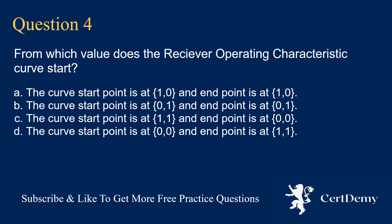Question 4. From which value does the receiver operating characteristic curve start? Options: start point at (1,0) end point at (1,0); start point at (0,1) end point at (0,1); start point at (1,1) end point at (0,0); start point at (0,0) end point at (1,1). The answer is: the curve start point is at (0,0) and end point is at (1,1).